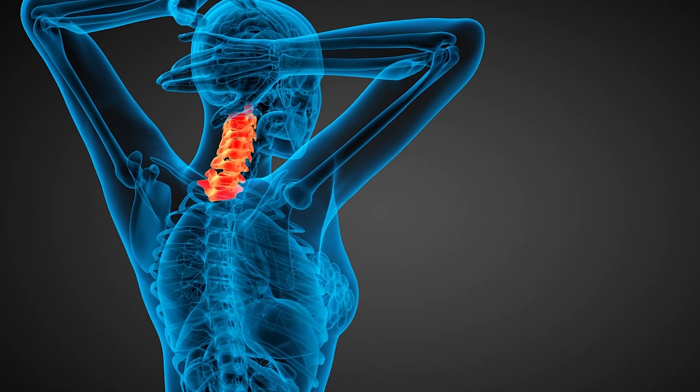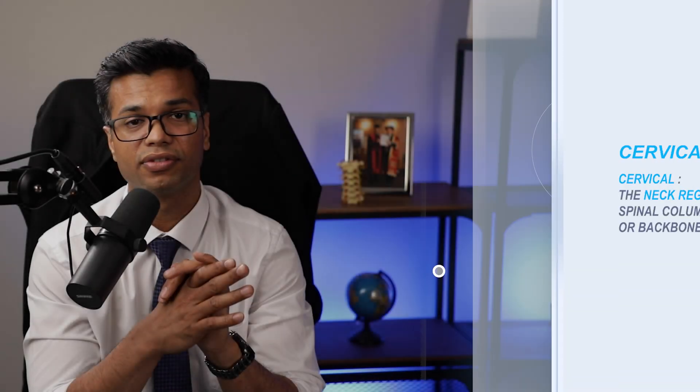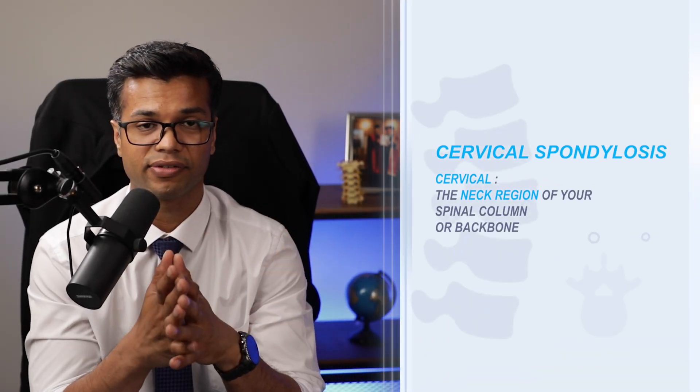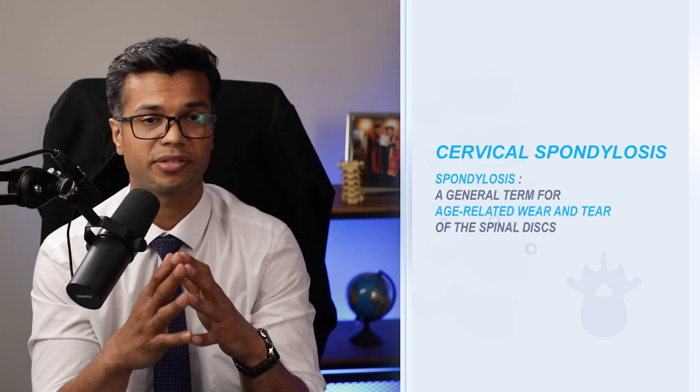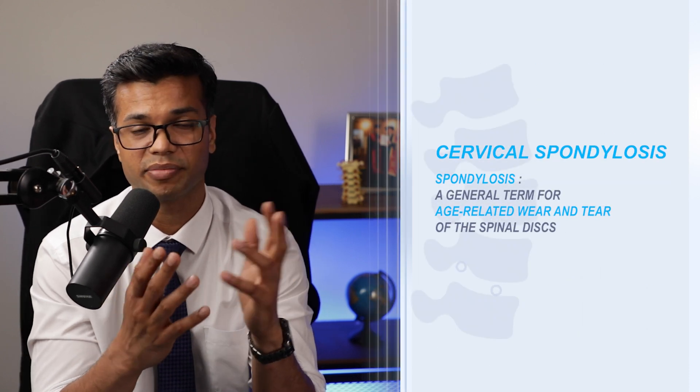Let's get back to the topic: cervical spondylosis. To put it simply, why do I have this gray hair? It just means I'm getting old, I'm aging. In similar terms, spondylosis means aging of the spine — lumbar or cervical. When you hear the term spondylosis it means wear and tear, it means degeneration. Cervical means neck, so cervical spondylosis means wear and tear or aging of your neck spine.